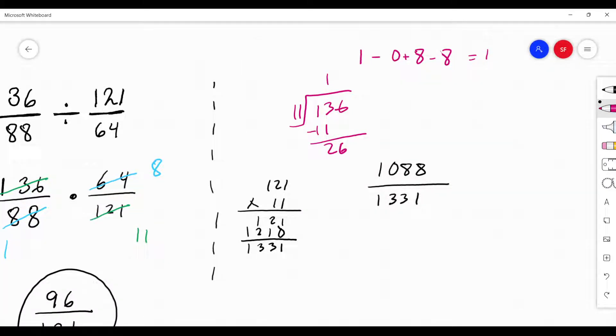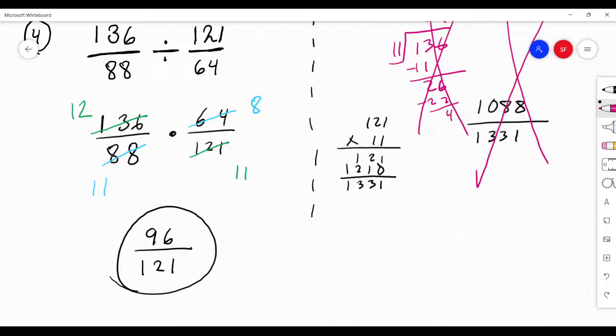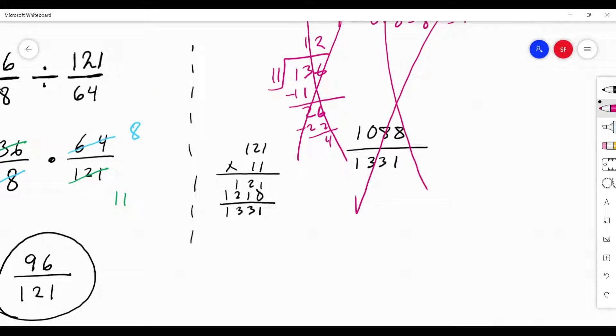136 is not divisible by 11. It should have been 132. Why did I write 136? Okay, so that means that y'all got it right. Those of you got 1,088 over 1,331. That's what happens when you try to do things quickly in your head. The moral of the story is, write it down.